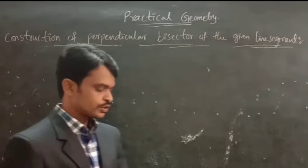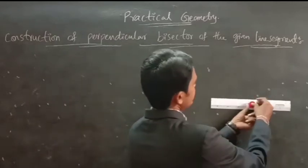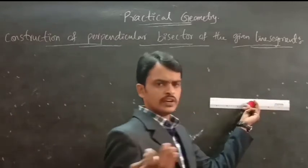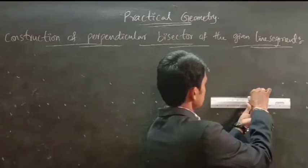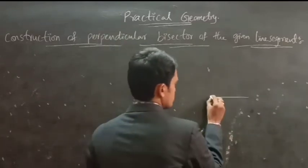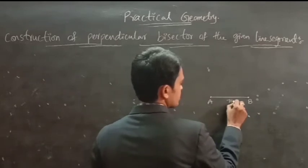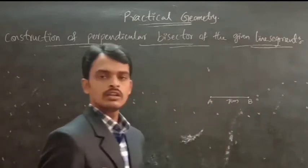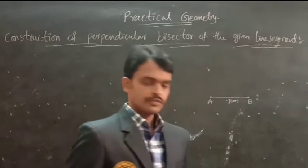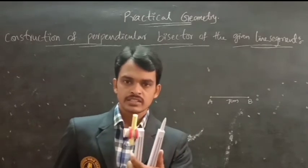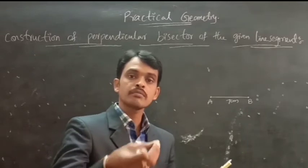First, we should draw a line segment of any length — either 3 cm, 4 cm, 5 cm, any length we can draw. First, we should draw a line segment. Suppose I am taking 7 cm, named as AB. After that, we are using a compass. Open the compass to some radius — it should be more than half of the line segment AB.